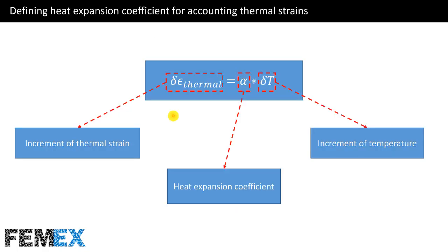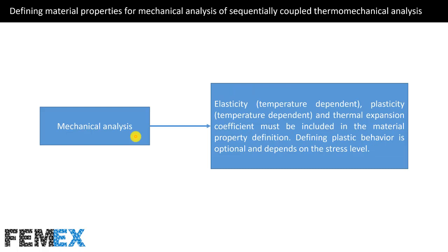Now I want to talk about defining the heat expansion coefficient for accounting thermal strains. The increment of thermal strain is equal to the product of alpha and the increment of temperature, where alpha is the heat expansion coefficient. For mechanical analysis of sequentially coupled thermo-mechanical analysis, elasticity, plasticity, and thermal expansion coefficient must be included in the material property definition.